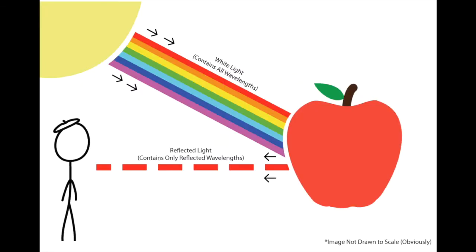We can look at this diagram of why an apple is red. You can see the waves of light - all wavelengths of white light - strike the apple. Everything but red stays in the apple; it gets absorbed by the apple itself. Red is the only thing that bounces off, flies back, hits you in the eye, and your eye converts that light into an image. That's how we actually see colors.